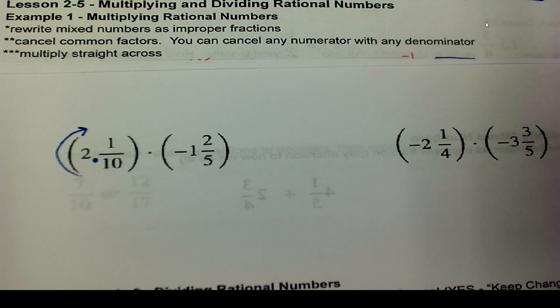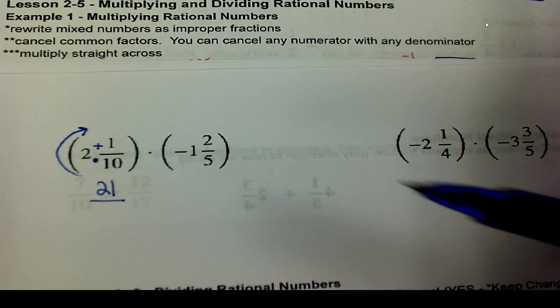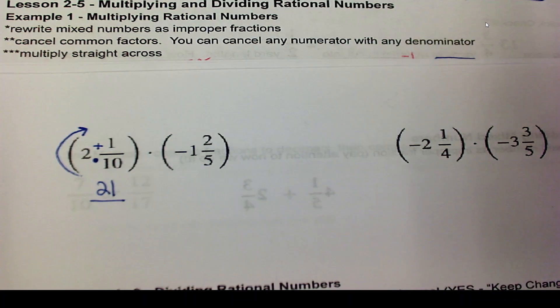2 times 10 is 20. Then we add the 1 to the 20 and we get 21. Steal the denominator and put that underneath it.